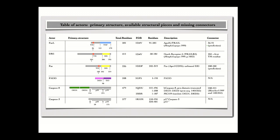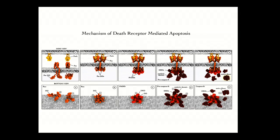Just to walk through an example production pipeline: this is a movie we did for Vishwa Dixit at Genentech, where he wanted us to use the latest data to explain DISC assembly — the FAS-dependent apoptosis pathway. We start by reading lots of papers — exactly like figuring out your next experiment at the bench. You gather the literature and try to make sense of it, which leads to something that maps the key protein actors, relevant domains, what we have structure for, what we're missing, and where it comes from.